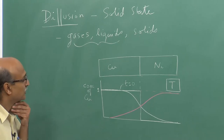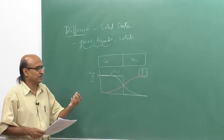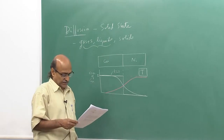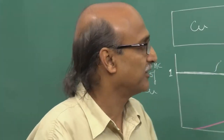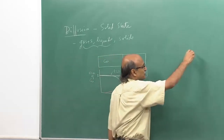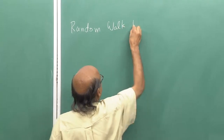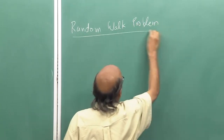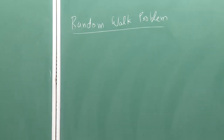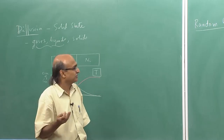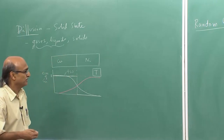Before I go into diffusion in the solid state, I would like to introduce a problem called the random walk problem, also often called the drunken walk problem or Brownian motion, where a particle could move in three dimensions in any direction. We can look at such a problem in two dimensions or in one dimension.